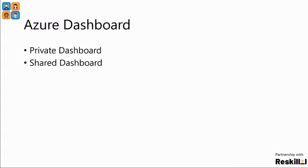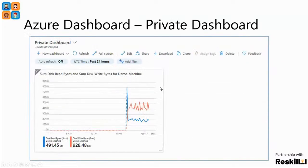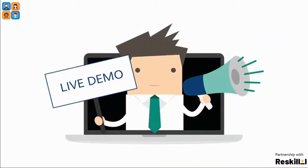This is one of the shared dashboards where we can see different data — for example a bar chart for a particular demo machine with analytical data from multiple machines. Multiple data sources can be displayed within dashboards. The private dashboard has no visual difference from shared dashboards — the only difference is that private is available only to you, while shared is available to users with permissions. Now let's go and see how to create dashboards. I'll open the Azure homepage and go to All Services. We have an option called Dashboards.